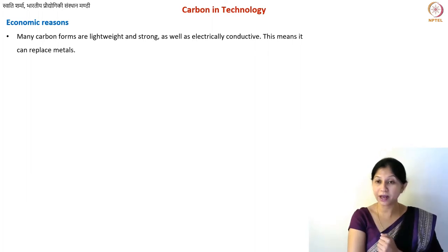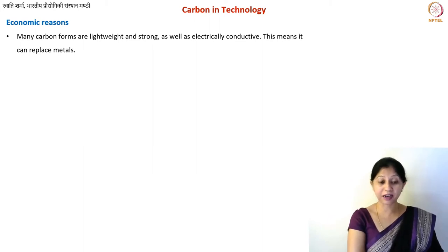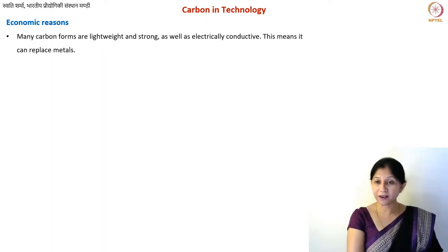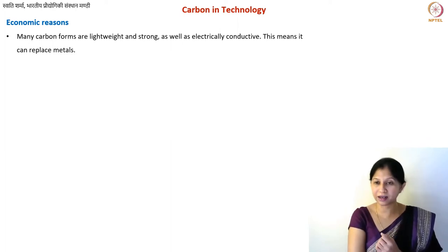One more important thing: for many applications you require materials that have electrical conductivity, which is why we use metals. Graphite or graphite-like carbons do have electrical conductivity, though not as high as metals. In fact, graphite is a semi-metal — not a semiconductor, not a conductor in the traditional way. In one of the lectures I will explain based on band structure why we call it a semi-metal. With some additives in graphite-like carbons, you can achieve high conductivity structures.